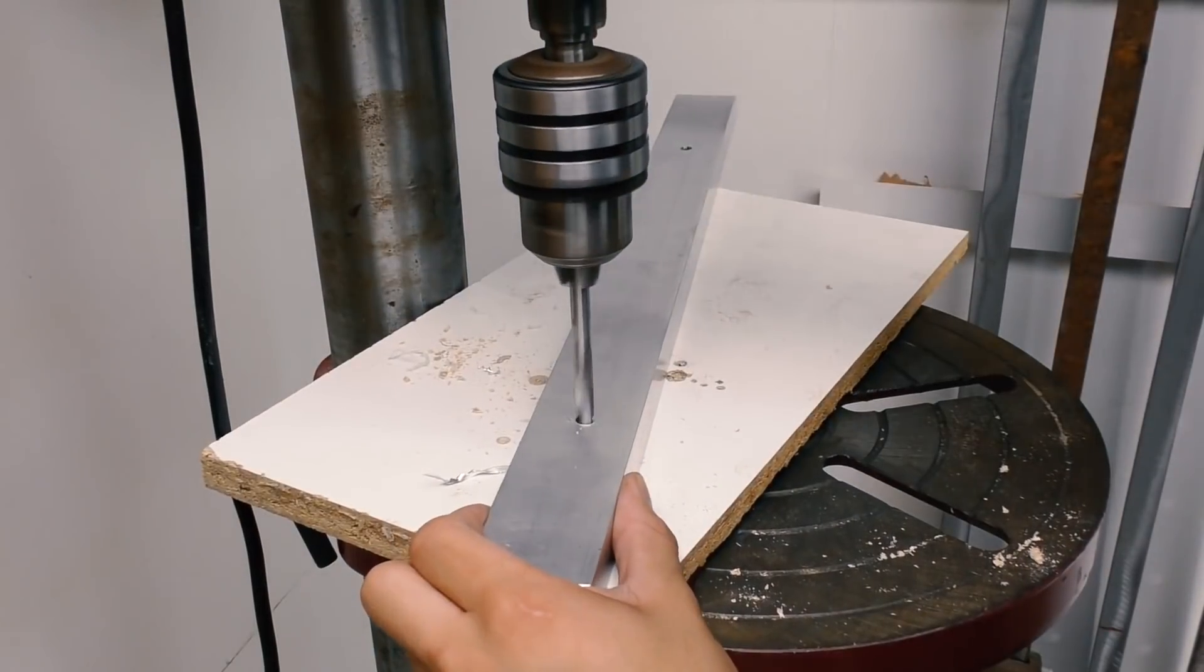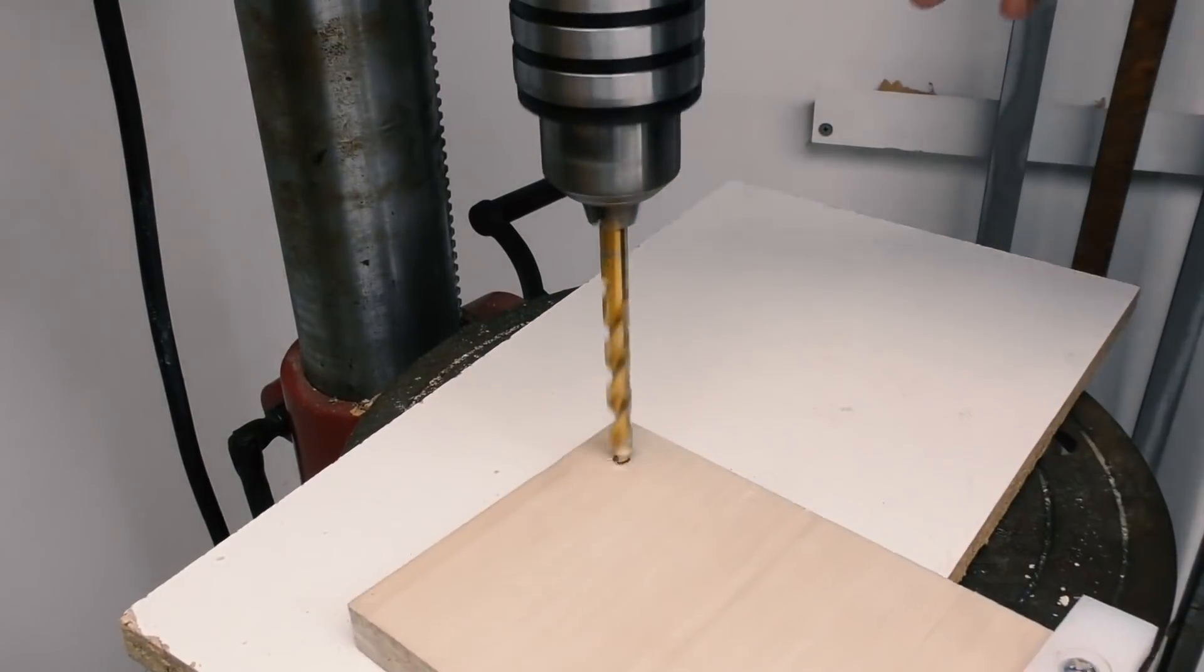To make the fence adjustable, I am enlarging one of the holes slightly. Then I can fit the T-nut into the base.